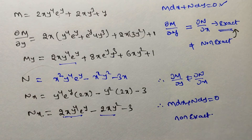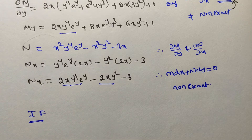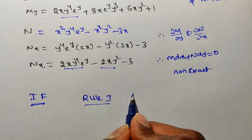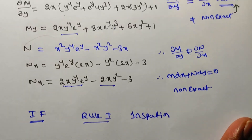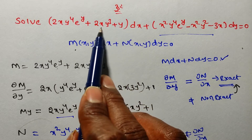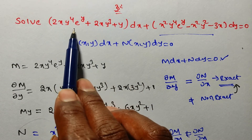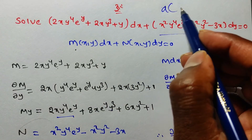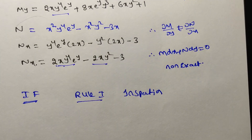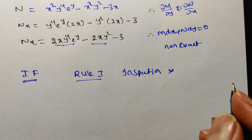Since it is non-exact, we cannot get the solution directly — we need to find an integrating factor. We check Rule 1 (inspection method): we try to separate variables into derivative forms, but this is not possible here. Inspection method was discussed in earlier videos. So inspection method does not apply.